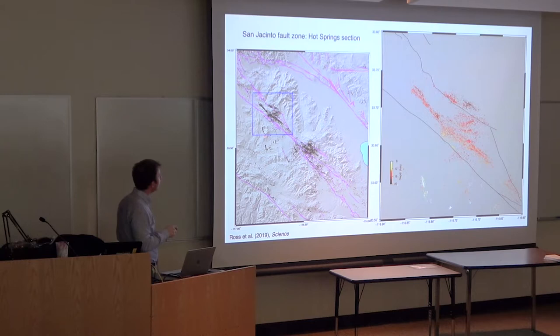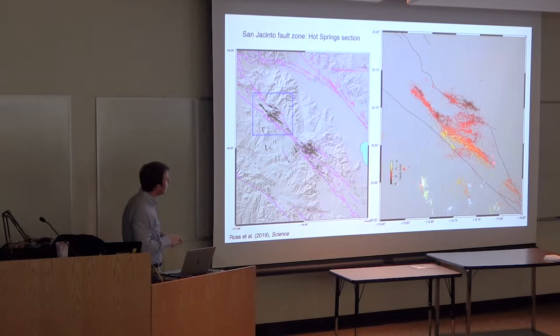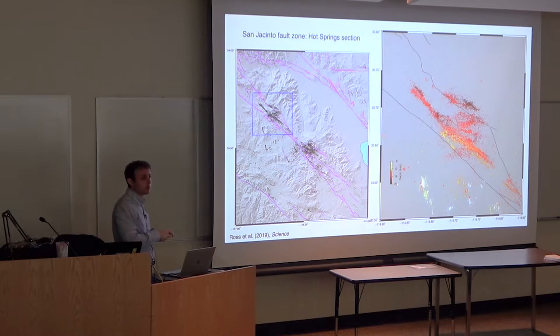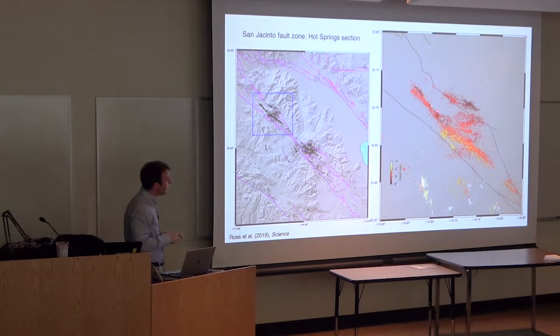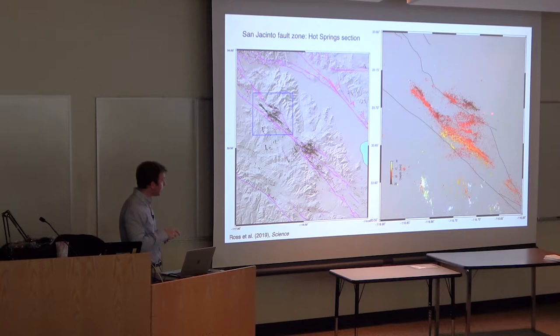Moving to the adjacent Hot Springs section, the original catalog shows a somewhat diffuse cloud with some evidence of structures. In our new catalog it's much clearer - the main Clark strand again shows curvature, with a fault zone width of about a kilometer, larger than our nominal location resolution of 100-200 meters. We believe this distributed nature is genuine and the fault itself is not perfectly localized in this area, with a parallel set of structures visible as well.